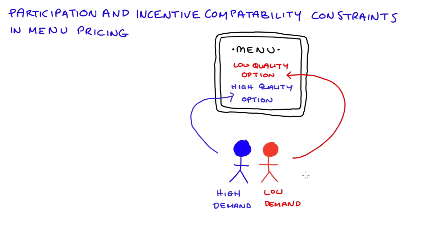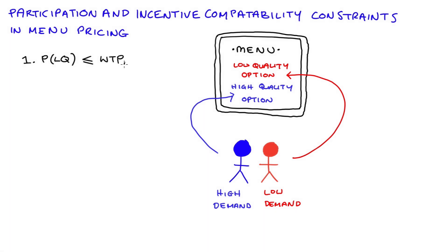There happen to be four conditions that our menu must meet in order to make sure that our customers sort themselves in the right way. To start, let's think about the price of the low quality option. We want to sell this option to the low demand consumer, so at the least we must make sure that the price of that low quality option is less than or equal to the willingness to pay of that low demand consumer for that low quality option.